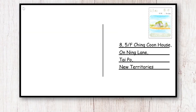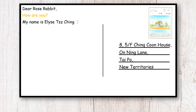Dear Rose Rabbit, how are you? My name is Elise Tzijun. I am Wolf's friend. I live in Tongchong on Lantau Island.